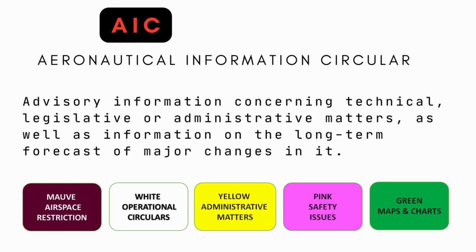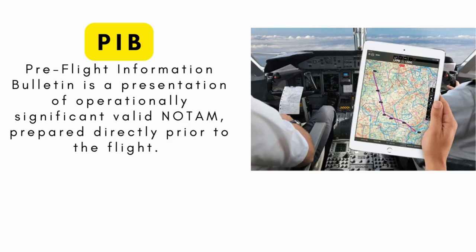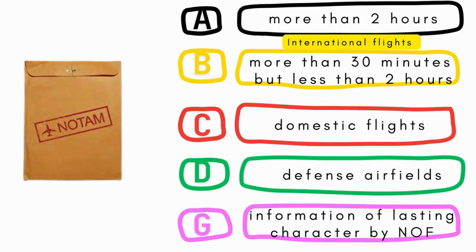The Pre-flight Information Bulletin (PFIB) is a presentation of operationally significant valid NOTAMs prepared directly prior to the flight. NOTAMs are required whenever information is of direct operational significance — timely knowledge of which is essential for personnel involved in flight planning. NOTAMs are to be originated and issued promptly whenever information is of a temporary nature and short duration, or when operationally significant permanent or long-duration temporary changes are made at short notice.